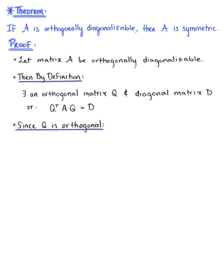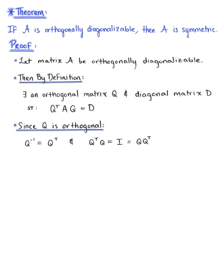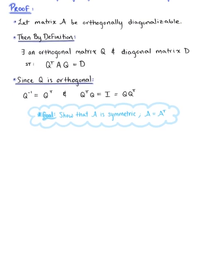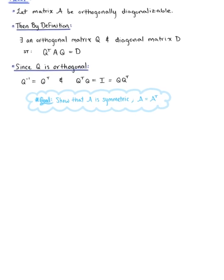...we know by definition that the inverse of matrix Q is equal to the transpose of matrix Q, and that the conditions of invertible matrices holds true for the transpose of matrix Q. Let's keep in mind that our goal here is to show that this implies matrix A is symmetric, or in other words, that matrix A is equal to its transpose.